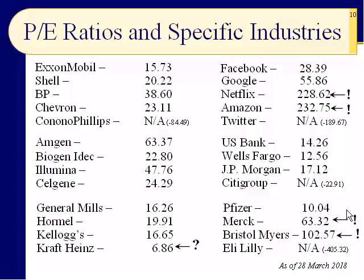Now, drug companies are also all over the map. Why does Pfizer have a PE of 10, Merck 63, Bristol-Myers 102, while Eli Lilly is losing money? Again, we need to do more research and decide whether it's warranted for Pfizer to have a 10 — is this a buying opportunity or a trap? Is it warranted for Merck and Bristol-Myers to have these outrageous PEs? Maybe it's just a temporary situation that will rectify itself quickly when new data comes out.